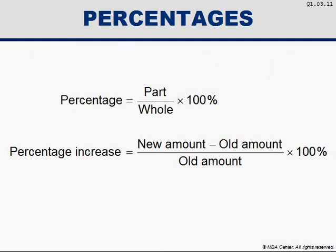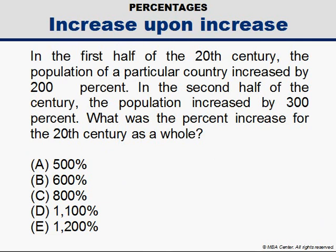Back to our problem. We have two percentage increases here, one from 1900 to 1950 and one from 1950 to 2000. Nevertheless, the problem asks for one single increase, from 1900 to 2000.